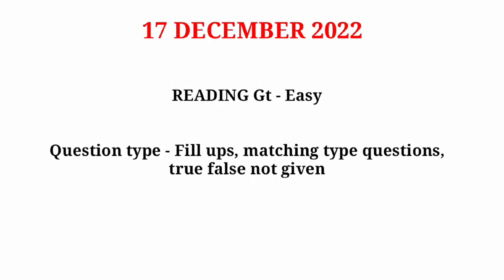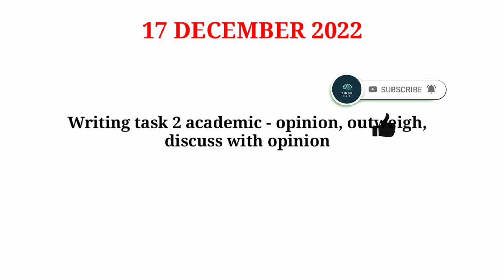For GT Reading on 17th December, the level will be easy, and the most likely question type will be fill-ups in the form of note completion and summary, along with matching type questions and True/False/Not Given. For Writing Task 1 Academic, expect pie, table, line, and combination of charts — most probably a combination of charts. For Writing Task 2 Academic, expect opinion and discuss with opinion essays. For Writing Task 1 GT, expect an informal letter.